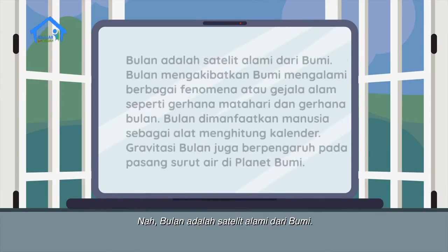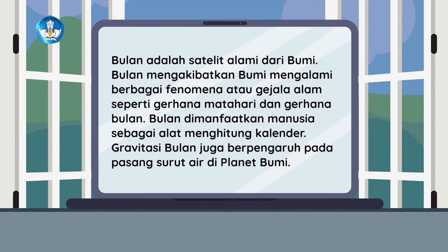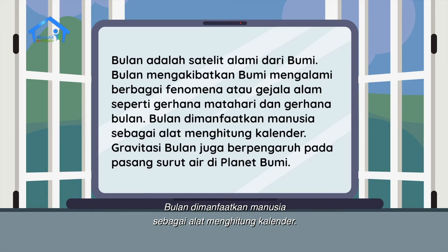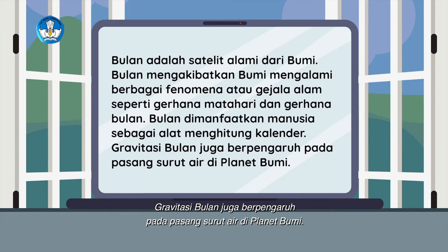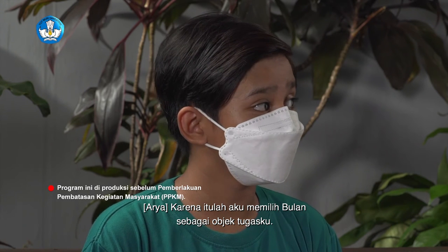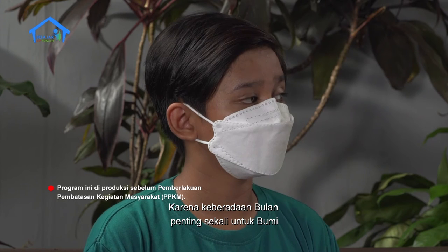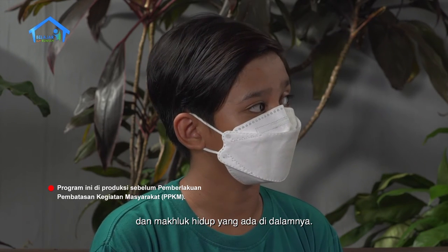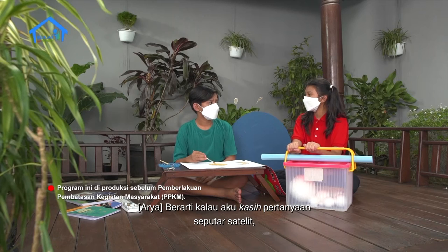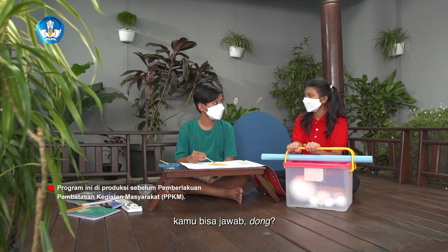Bulan adalah satelit alami dari bumi. Bulan mengakibatkan bumi mengalami berbagai fenomena atau gejala alam seperti gerhana matahari dan gerhana bulan. Bulan dimanfaatkan manusia sebagai alat menghitung kalender. Gravitasi bulan juga berpengaruh pada pasang surut air di planet bumi. Karena itulah aku memilih bulan sebagai objek tugasku, karena keberadaan bulan penting sekali untuk bumi dan makhluk hidup di dalamnya. Kamu ngerti kan? Tentu dong.